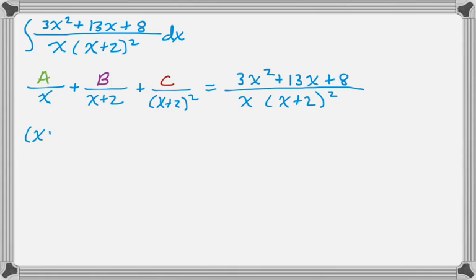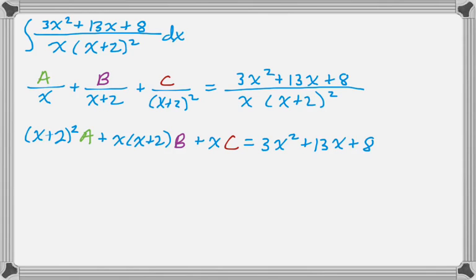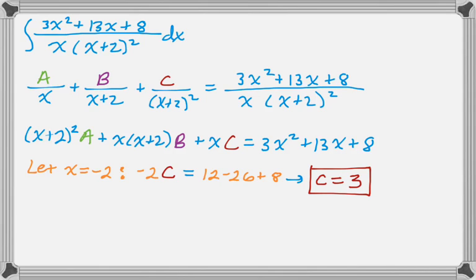And what I want to do is multiply through to clear the denominator. So just make sure you do this part right, otherwise you're kind of doomed. Letting x equal negative 2 will solve for c in this case. So I get negative 2c equals, just kind of plug in, I get c equals 3. So now I know what c is.